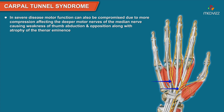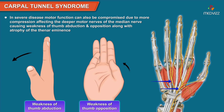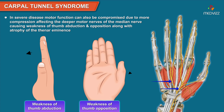In severe disease, motor function can also be compromised due to greater compression affecting the deeper motor nerves of the median nerve, causing weakness of thumb abduction and opposition along with atrophy of the thenar eminence.